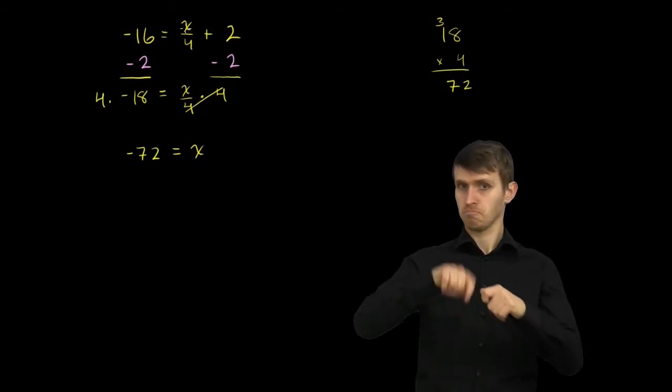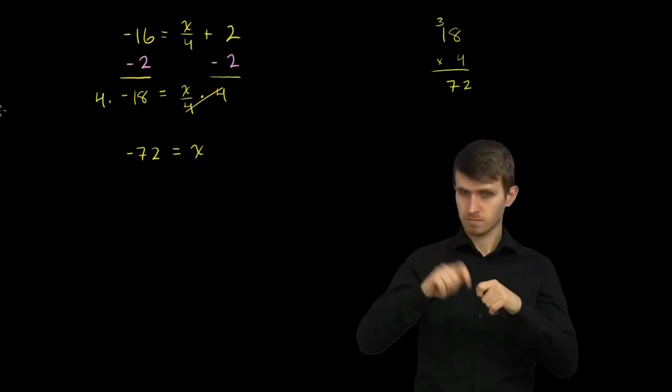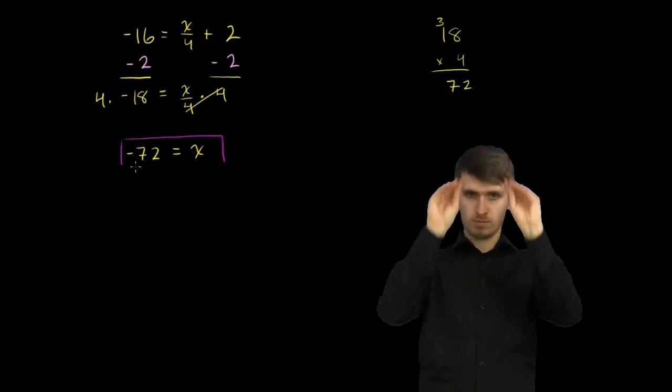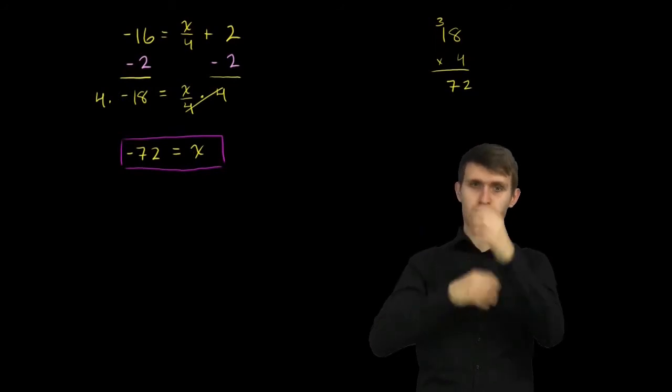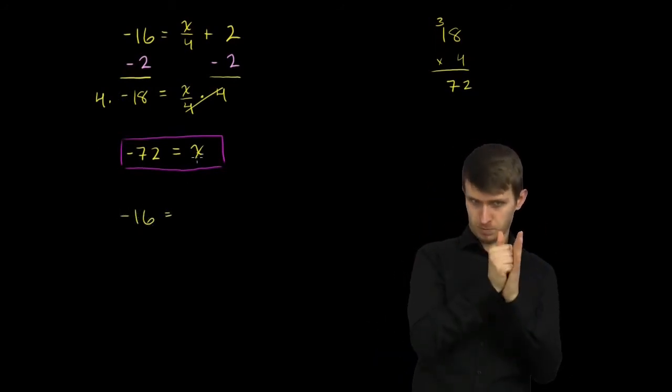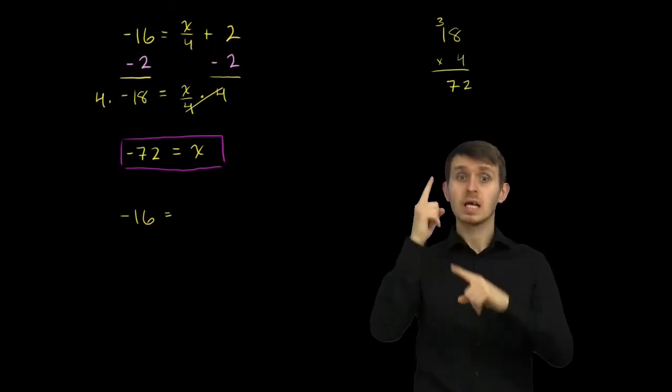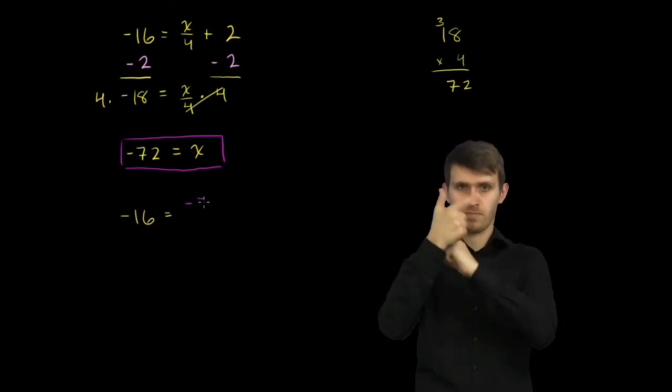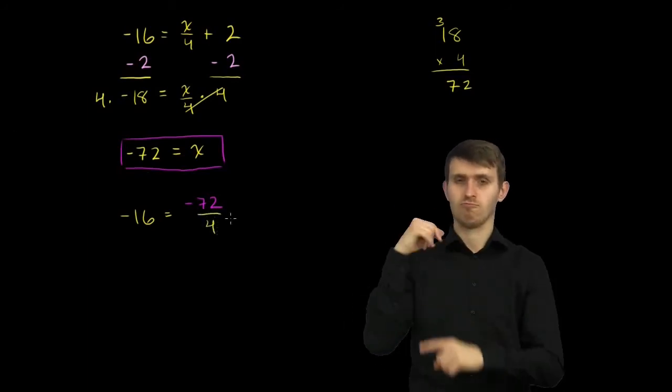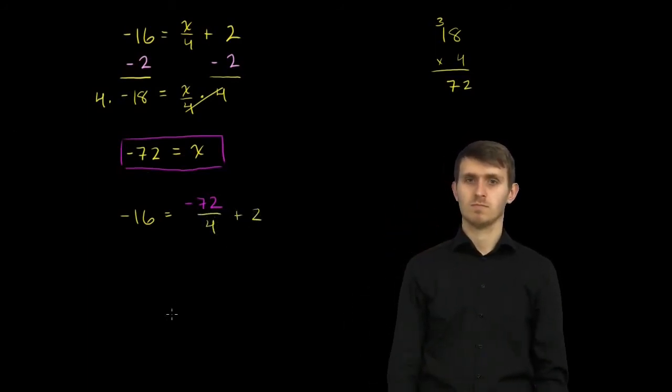And if we want to check it, we can just substitute it back into that original equation. So let's do that. Let's substitute this into the original equation. So the original equation was negative 16 is equal to, instead of writing x, I'm going to write negative 72, is equal to negative 72 over 4 plus 2.